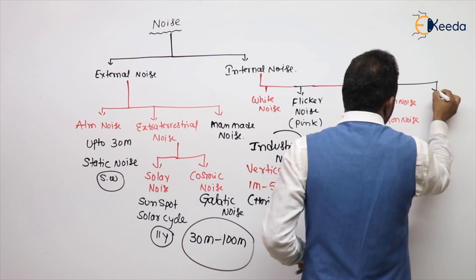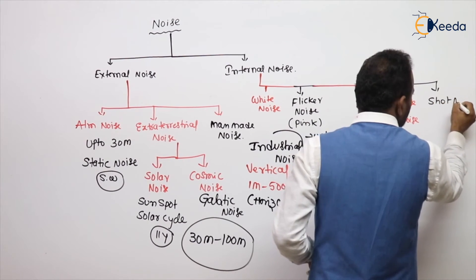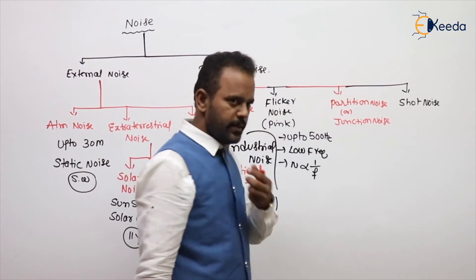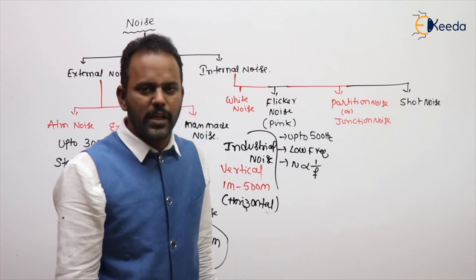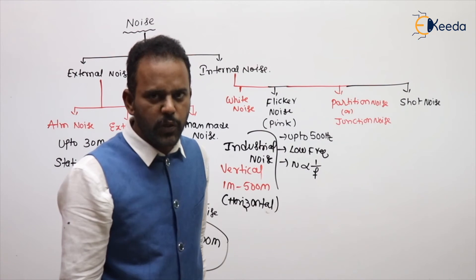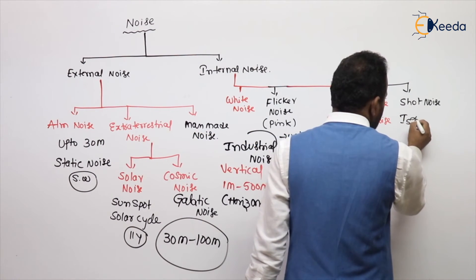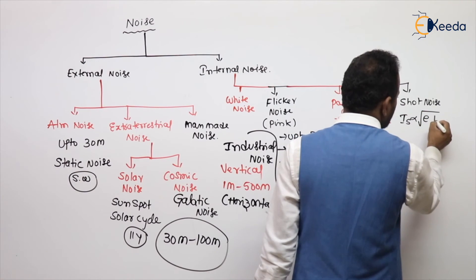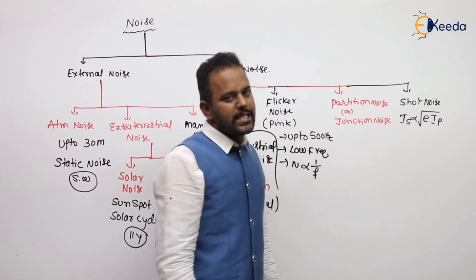Next, we have shot noise. Shot noise is due to DC biasing, and it is directly proportional to the square root of the plate current IP or collector current IC.